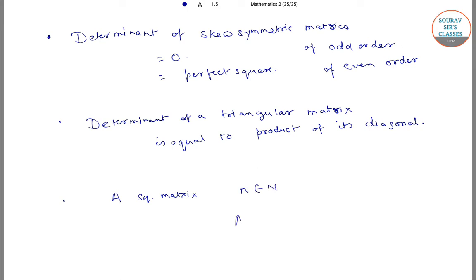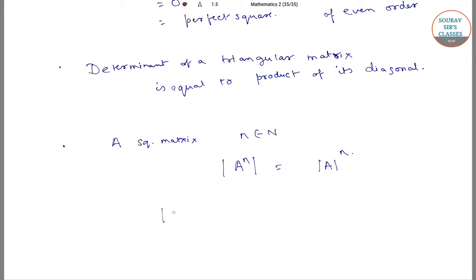If A is a square matrix and n is a natural number, then the determinant of Aⁿ is equal to the determinant of A raised to the power n. If the determinant of A equals zero, then we say that A is a singular matrix. If the determinant of A is not equal to zero, then A is a non-singular matrix.